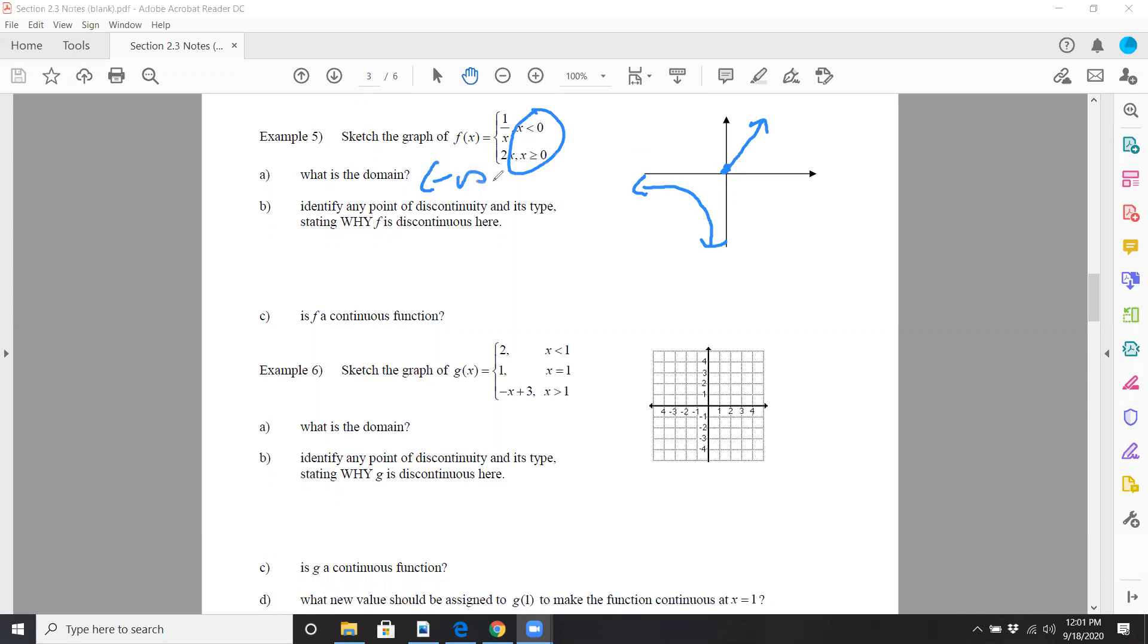Identify any point of discontinuity and type. Why is it discontinuous? Definitely I would say it's not continuous at x equals zero, because obviously it's not connected, and I would call this an infinite discontinuity.